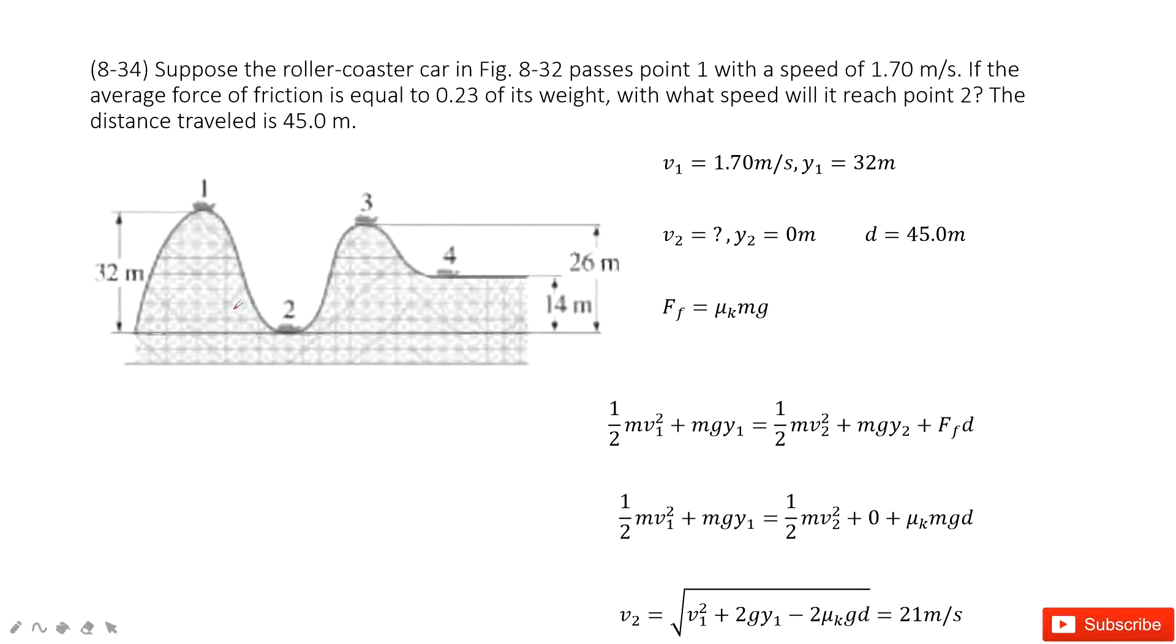We look at this roller coaster from previous problems. We know the initial position is 0, the velocity and position is given. We need to find the velocity at position 2, and the position y2 is given as 0 meters. Also from position 1 to 2, the distance covered is given as 45 meters. So we need to find v2.